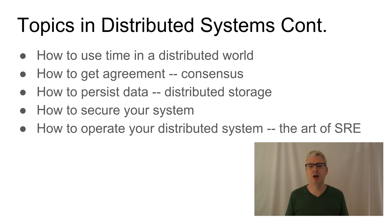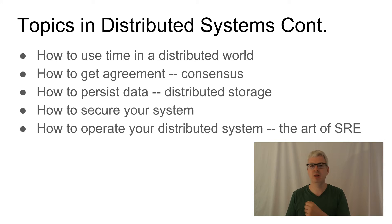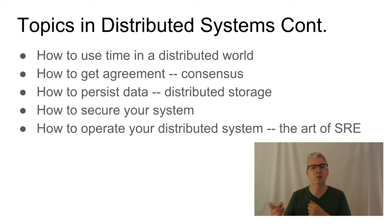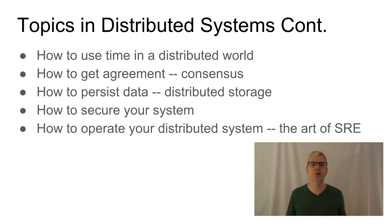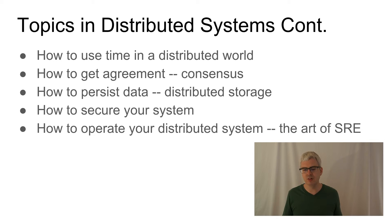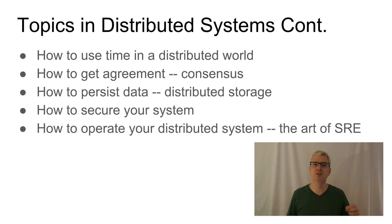The next topic is time. When you first think about time, you think you really understand it — I've got a watch, it measures time at one second per second. But in a distributed system, my watch isn't necessarily synchronized with yours, so we may disagree about what time it is. This matters whenever you have events happening on multiple machines and you care about ordering. For example, if you're implementing Facebook and people are commenting on a popular post, the conversation would be disjointed if comments appeared in different orders to users in Europe versus North America.